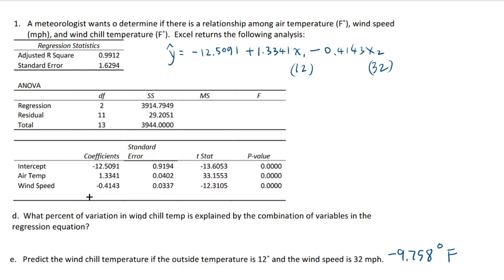What percent of variation in wind chill temperature is explained by the combination of variables in the regression equation? Whenever you're asked what percent of variation is explained, that's the adjusted R-squared. The adjusted R-squared is 0.9912, or 99.12%, which is the amount of variation in the wind chill temperature explained by these two variables in the regression equation.